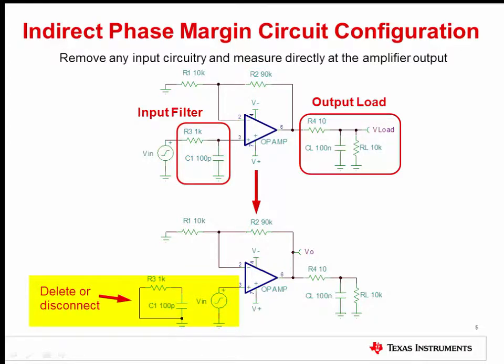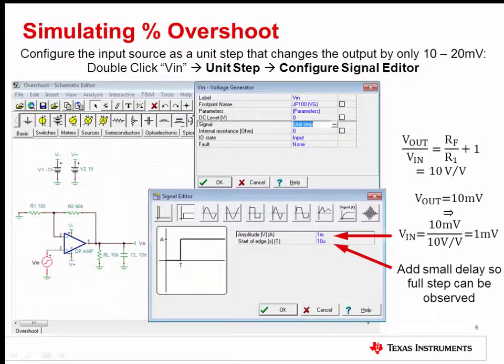In SPICE, this is fairly simple and involves disconnecting the input filter and moving the input source. On the bench, this may require minor PCB rework so the input filter is disconnected and a signal can be applied directly to the non-inverting input. The next slides detail how to simulate percent overshoot and AC gain peaking in SPICE, and the same basic principles can be applied to bench testing as well.